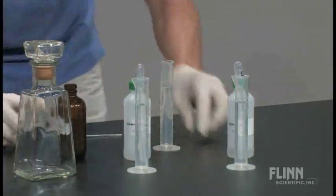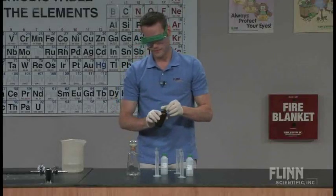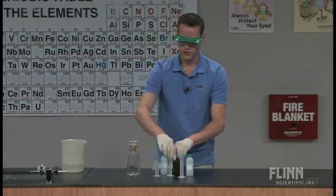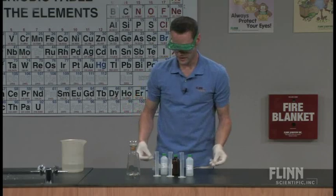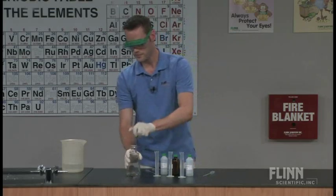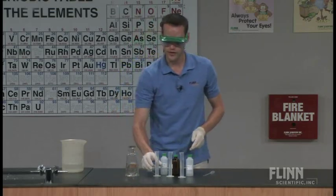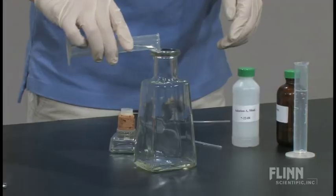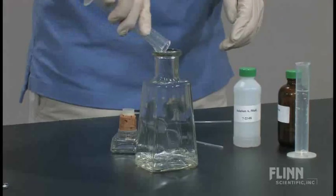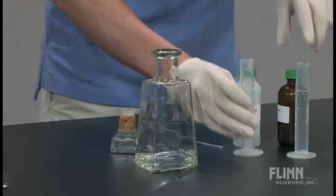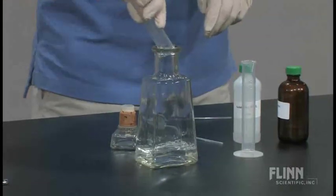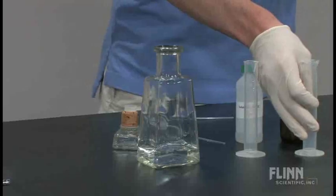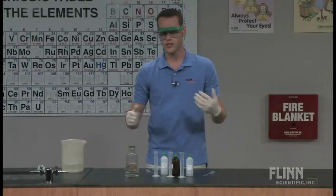So I just need to pour out 25 milliliters of solution B. So I have 25 milliliters of each solution. Now I also tell my students it's very important to go in order. Solution A goes in first, solution B goes in second, and then solution C is the one that starts the reaction. So don't put in C until you're ready to go.